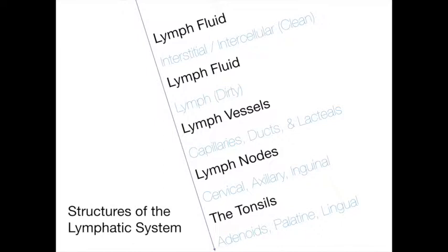Lymph capillaries, which are microscopic thin-walled tubes located just under the skin, carry lymph fluid from the tissues to the larger lymphatic vessels. Like veins, lymphatic vessels have valves to prevent the backward flow of fluid, and lymph always flows toward the thoracic cavity. The right lymphatic duct and the thoracic duct empty lymph into veins in the upper thoracic region. Lacteals are specialized lymph capillaries located in the villi of the small intestine, where fat and fat-soluble vitamins are absorbed and carried into the bloodstream.